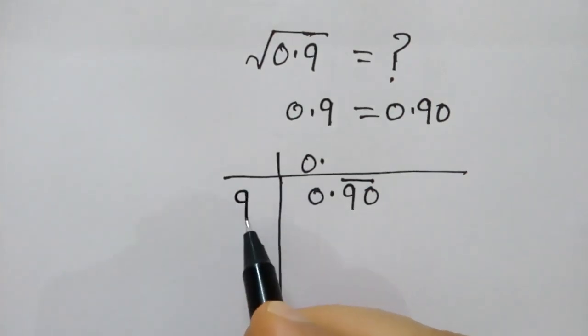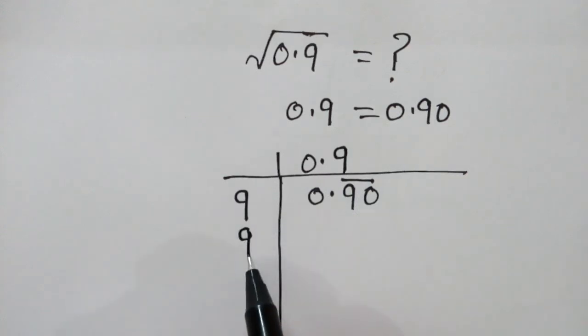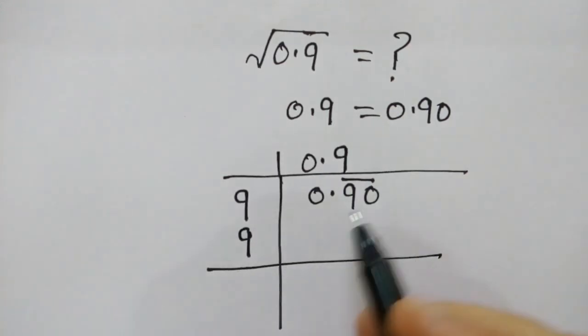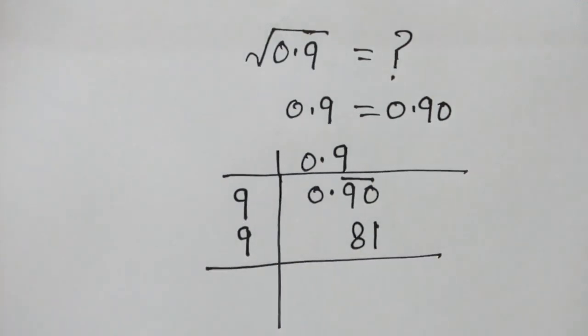Now we will divide by 9. Here, 9 and 9. So 9 times 9 is 81.